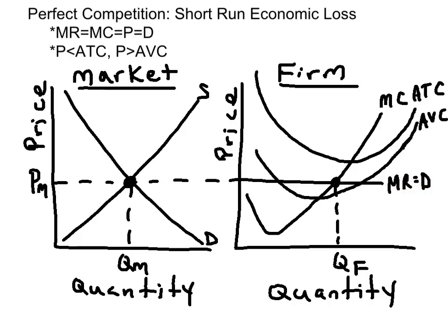This is showing a short-run economic loss because the price is less than the average total cost. It still makes sense for the firm to produce as long as the price exceeds the average variable cost.